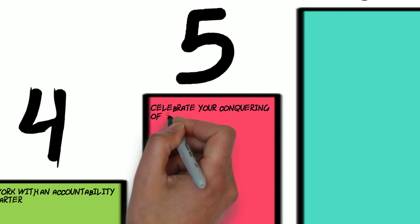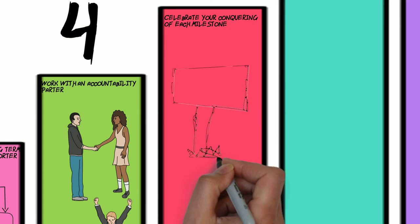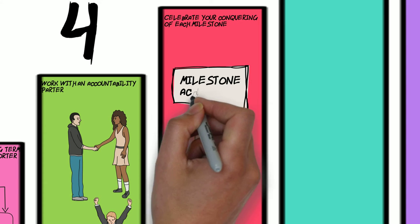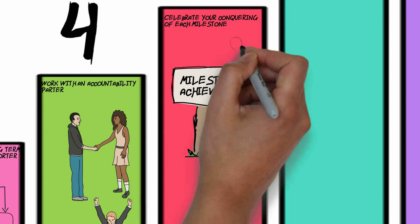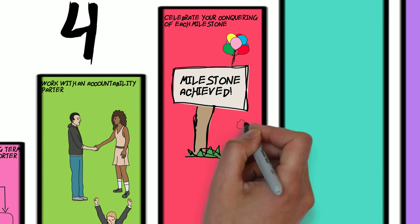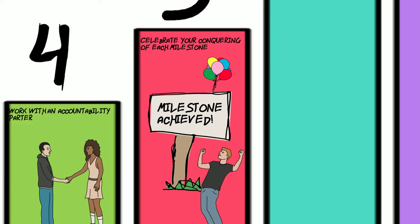Step five is celebrate your conquering of each of those milestones. Don't wait till the end result, constantly promising yourself that one day you will celebrate. No, choose to celebrate every milestone. My wife and I have a stupid little dance we do — in private, I might add — because it's not really something you would like to see. But we have fun, and it's our shared symbol of an achievement worth celebrating.